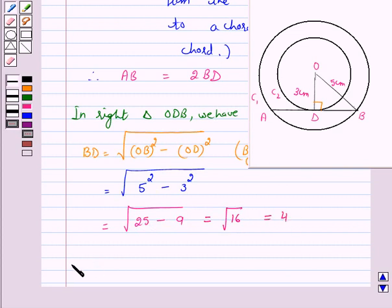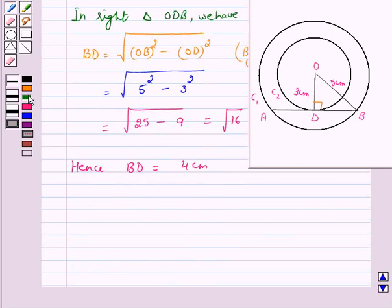Hence BD is equal to 4 cm. This implies AB is equal to 2 times 4 cm, which equals 8 cm, because AB equals twice BD. Hence the length of the chord of the larger circle which touches the smaller circle is 8 cm.